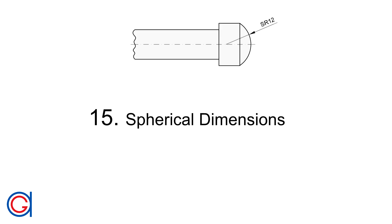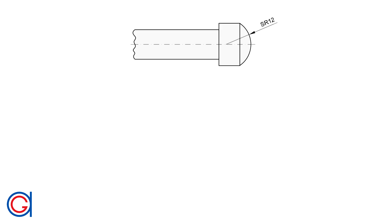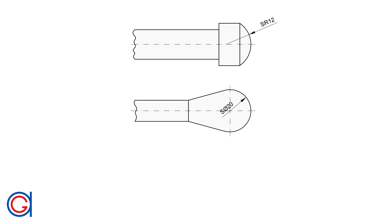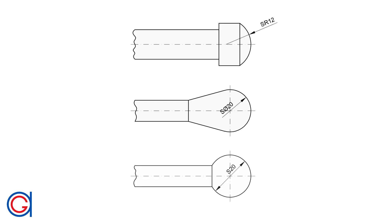Rule 15: Spherical dimensions. When dimensioning a sphere, we always put capital S before the dimension value. For a sphere less than 180 degrees we write SR (spherical radius). When greater than 180 degrees we write S and the diameter symbol, and we don't need to draw the full diameter but must indicate the full diameter value. For a case close to a complete sphere, we draw the full diameter and therefore don't need the dimension symbol after the capital S.